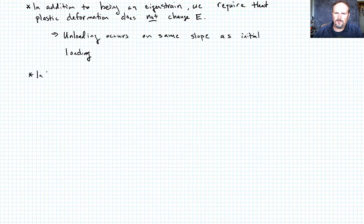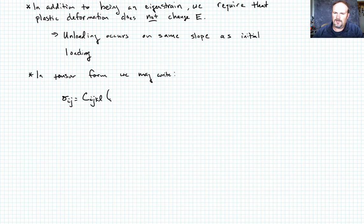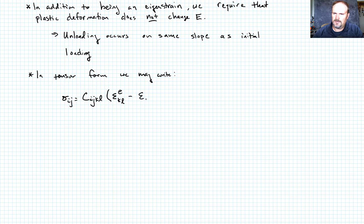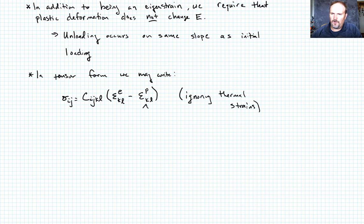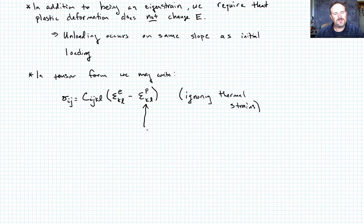In tensor form, sigma_ij equals C_ijkl times (epsilon_kl^E minus epsilon_kl^P), where epsilon_kl^P is the plastic strain — ignoring thermal strains. The focus of the next several weeks on plasticity is to determine what this plastic strain quantity is and how it evolves as we apply a load. So our focus will be on determining epsilon^P.